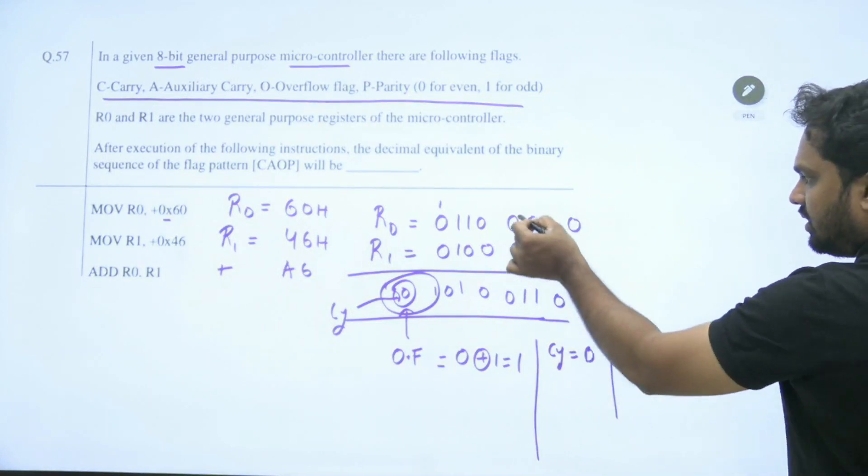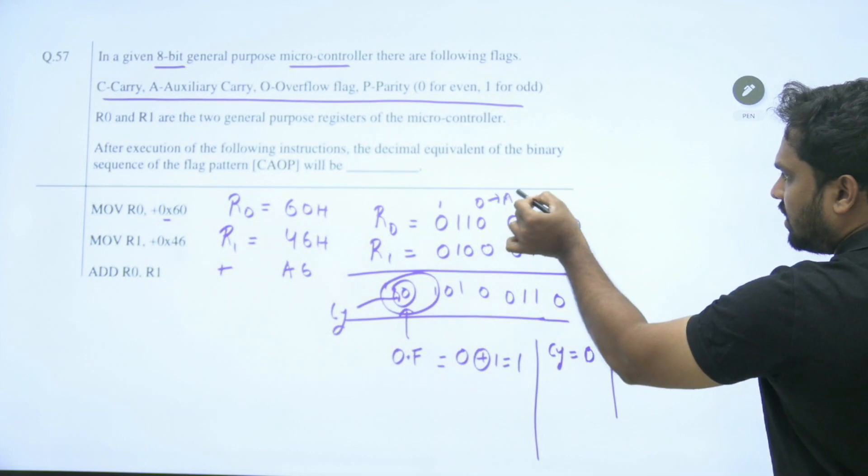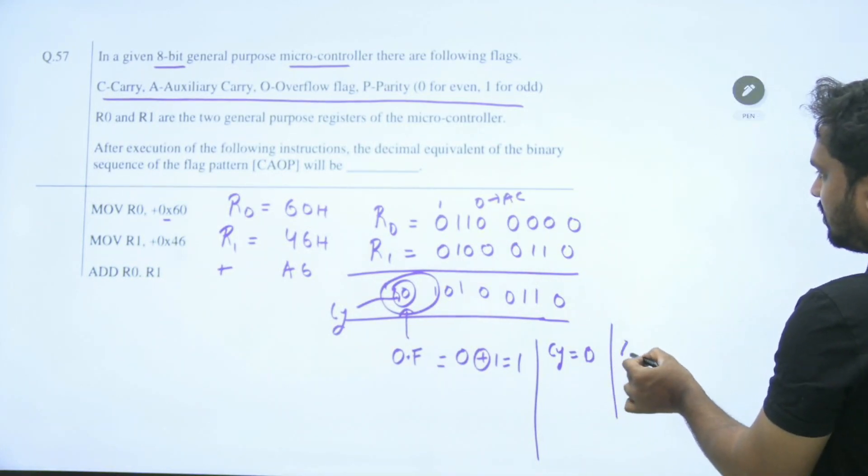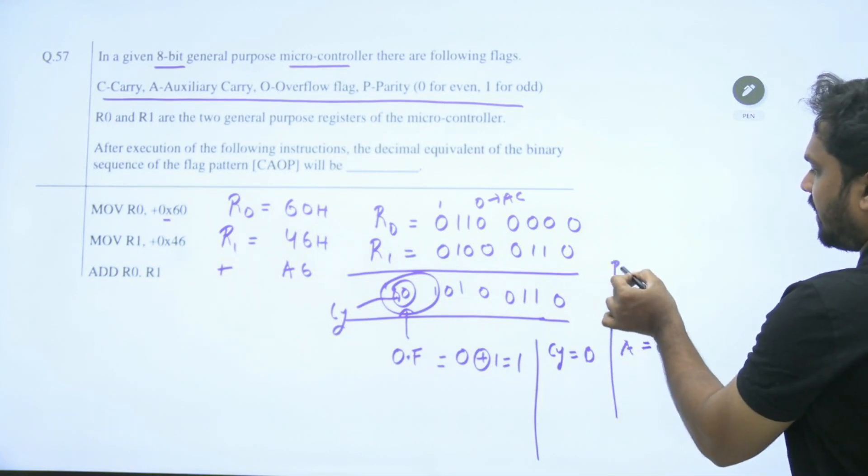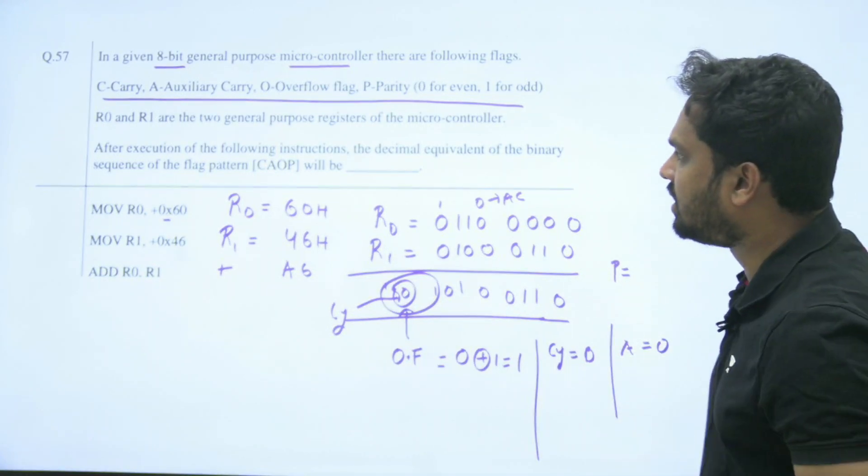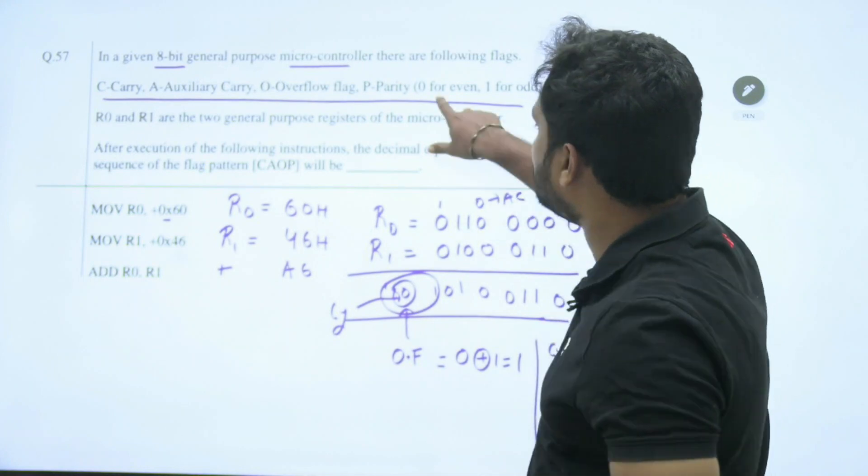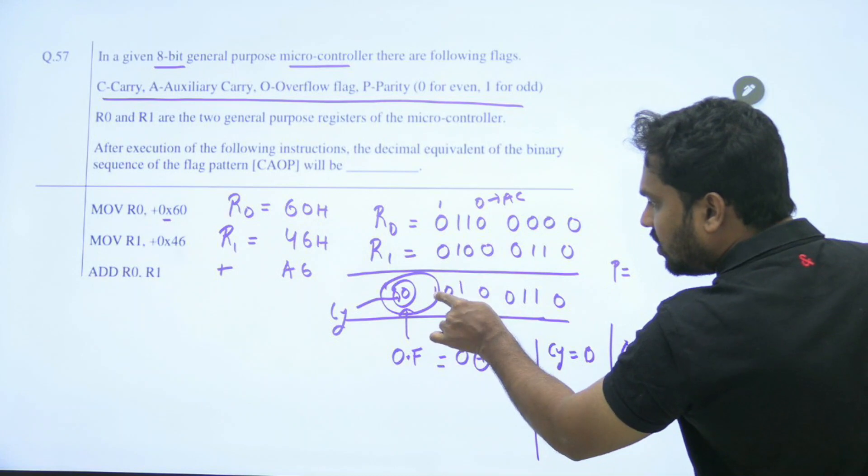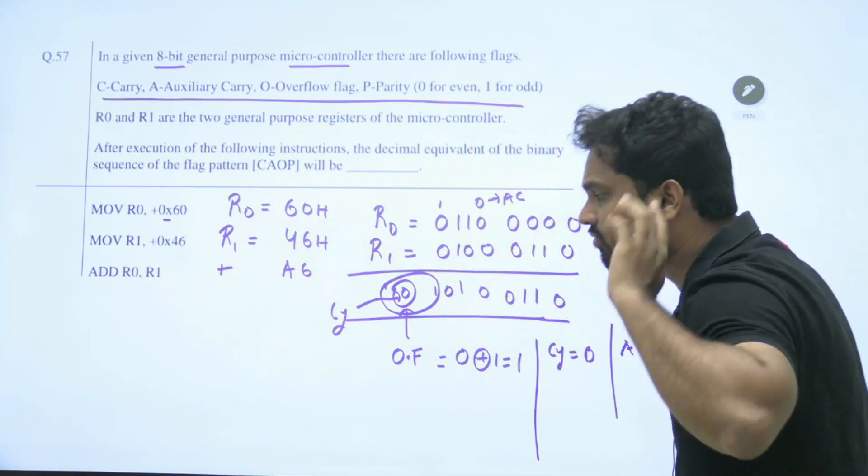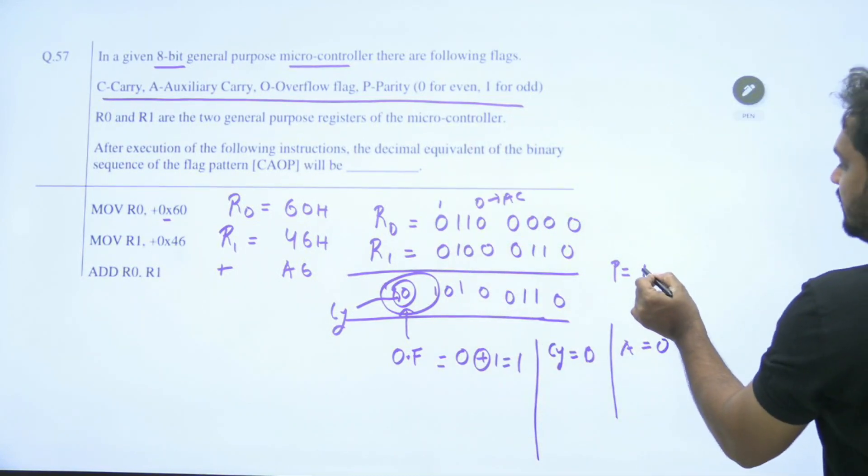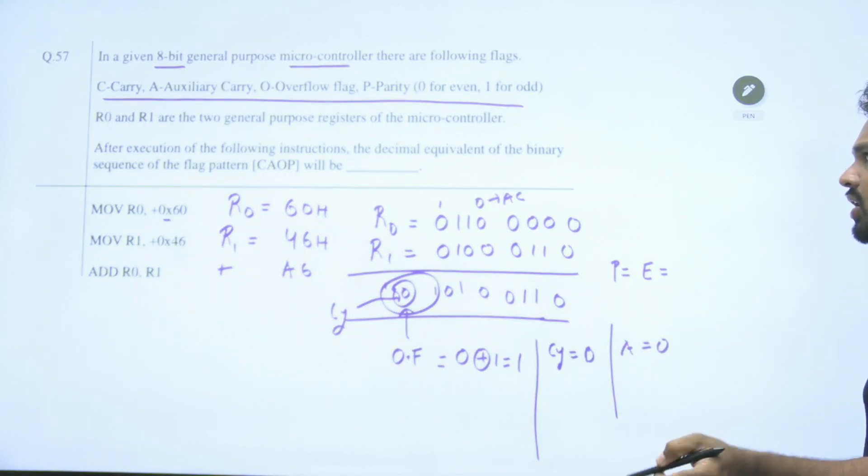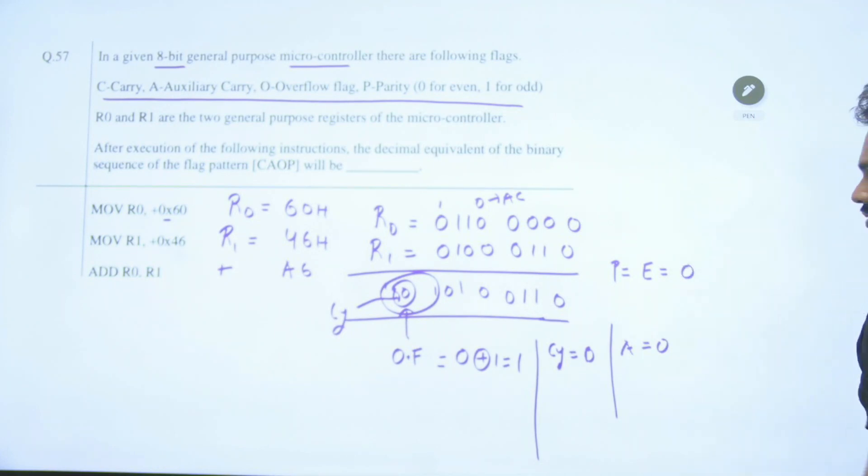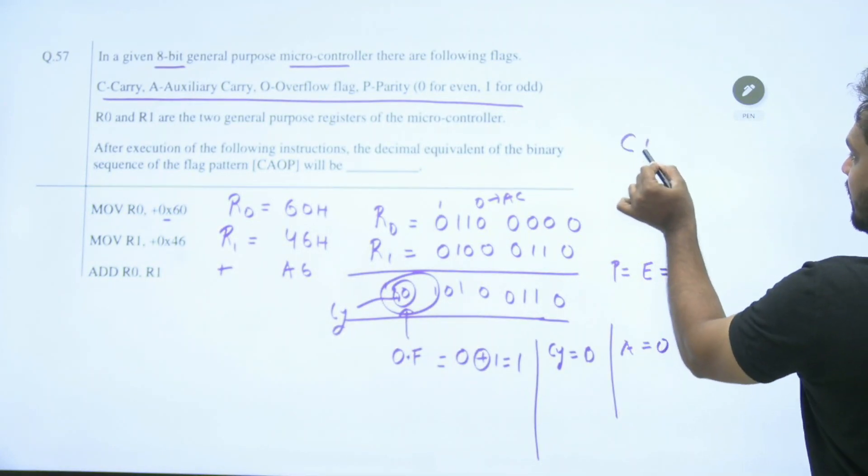0 and this addition is not giving anything, this is called auxiliary carry. Auxiliary carry is 0. And he asked parity. Parity is the number of ones in the result. He is saying parity is 0 for even number of ones, 1 for odd number of ones. How many ones are there? Count 1, 2, 3, 4. Four means even number of ones are present. Parity is even. Generally even is 1, odd is 0 in microcontrollers, but he has given specifically even is 0. Then what is the CAOP?